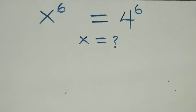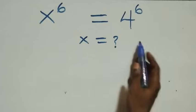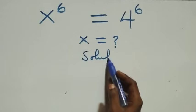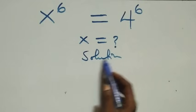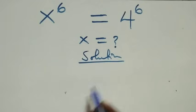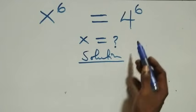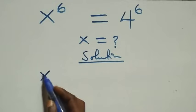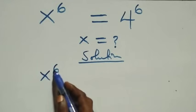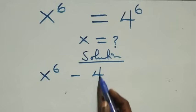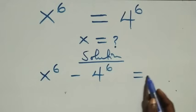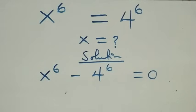Hello, you are welcome. We are going to solve this nice exponential equation. From what we have here, we can take 4 raised to power 6 to this side, and all we have becomes x raised to power 6 minus 4 raised to power 6 equals 0.